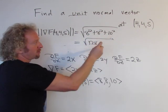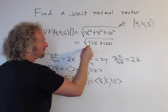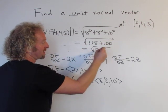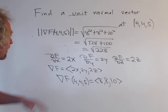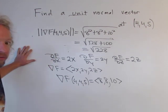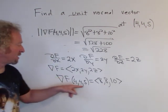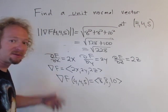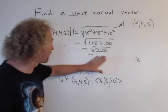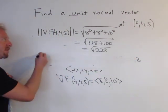This is going to be the square root of 228. So that's the magnitude of the gradient vector. Now all we have to do is divide each of these components by the square root of 228.